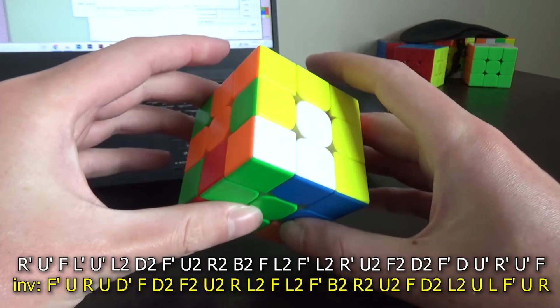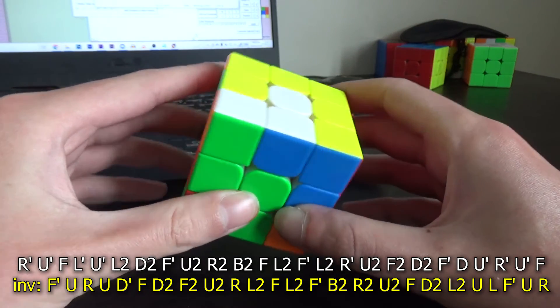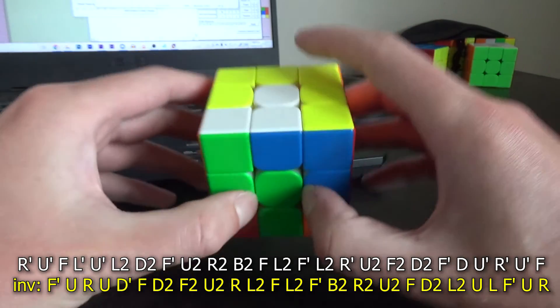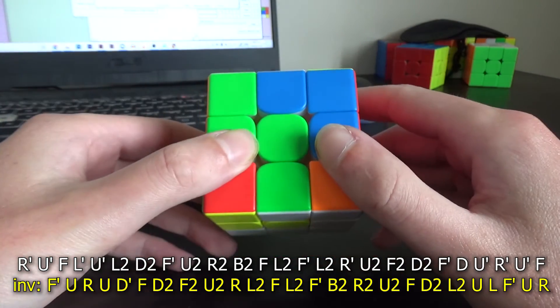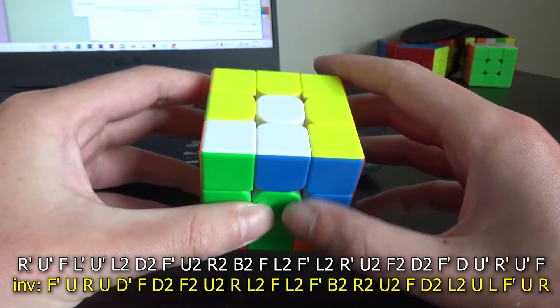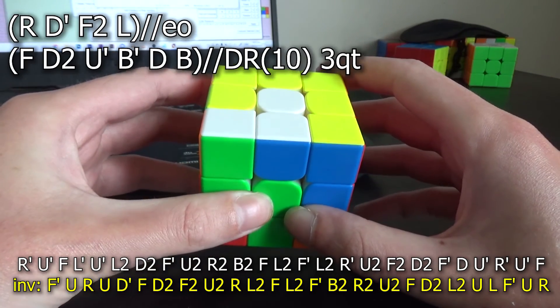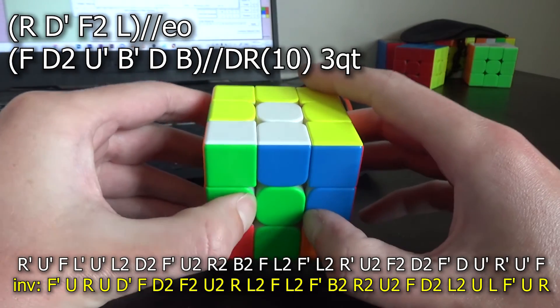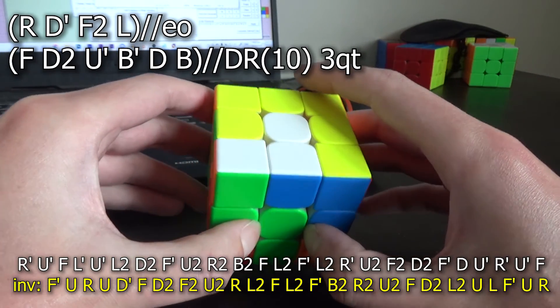Alright, we're gonna do an example solve and this is from my last attempt and it had a kind of tricky HTR so I think it's a good example. This is all on the inverse so I'll write the inverse scramble, and it's a 10 move 3 quarter turn DR, so pretty decent, and it was a lot better than any other DR I had on the attempt so I went with it.